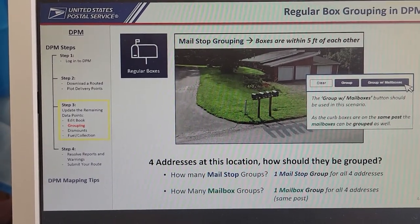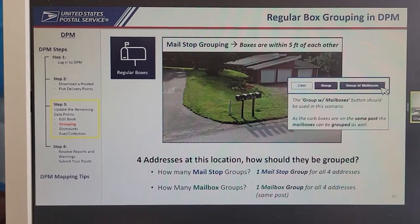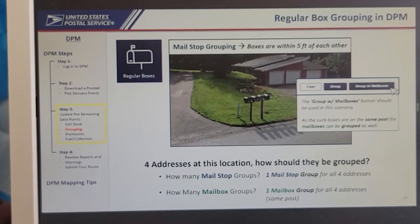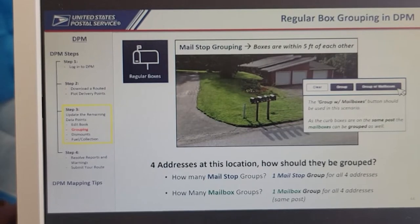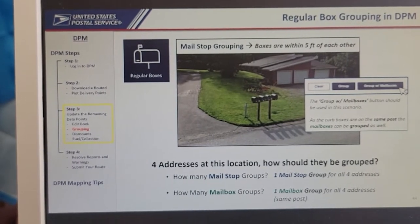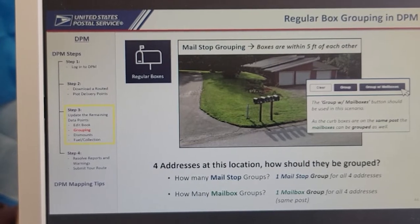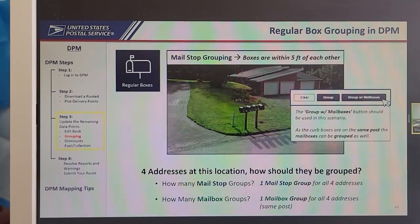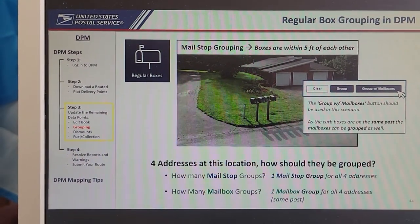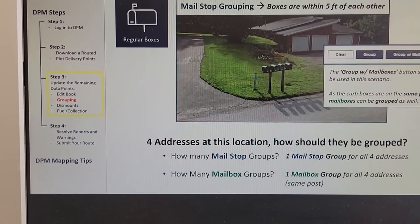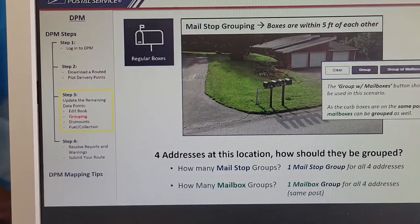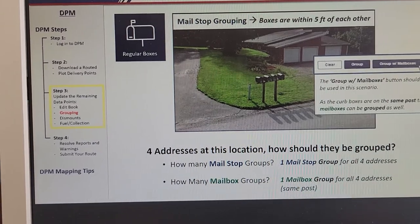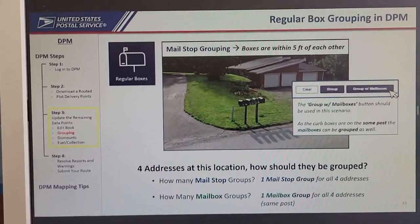In this example, there are four addresses at one location. These boxes are clearly within five feet of one another, so you can group both mail stops and mailboxes. You would have one mail stop group for all four boxes. Because the boxes are close and on the same post, you would also group with mailboxes. When creating this group, you click the first address, click the second address, and in the pop-up you click 'Group with Mailboxes' — and that creates your group.